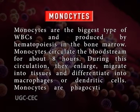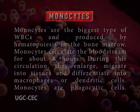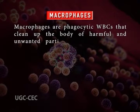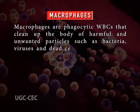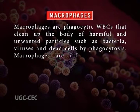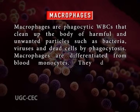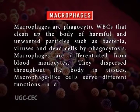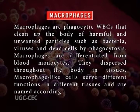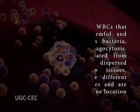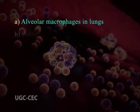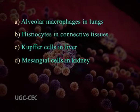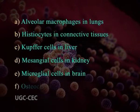Monocytes are phagocytic cells. Macrophages are phagocytic WBCs that clean up the body by engulfing harmful particles such as bacteria, viruses, and dead cells by phagocytosis. Macrophages are differentiated from blood monocytes and disperse throughout the body in tissues. They serve different functions in different tissues and are named by tissue location: alveolar macrophages in lungs, histiocytes in connective tissue, Kupffer cells in liver, mesangial cells in kidney, microglial cells in brain, and osteoclasts in bone.